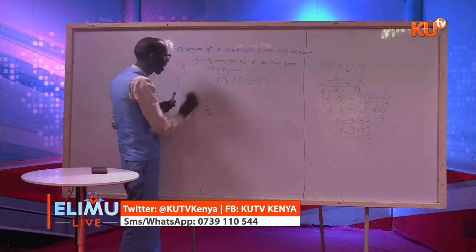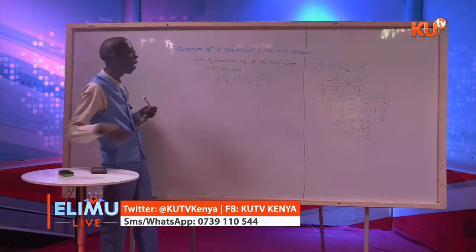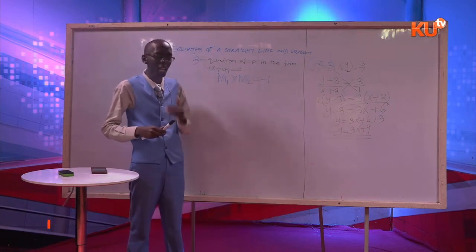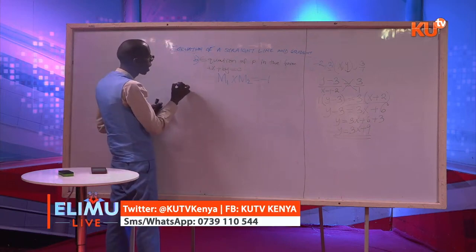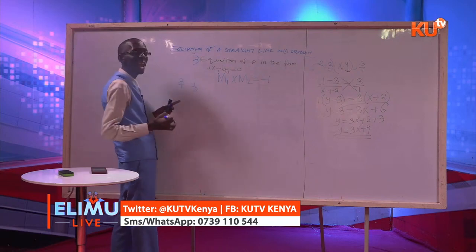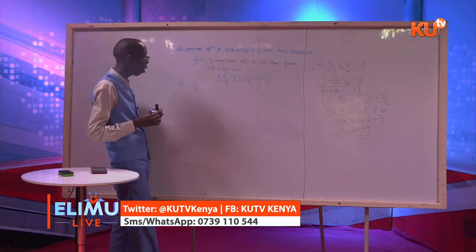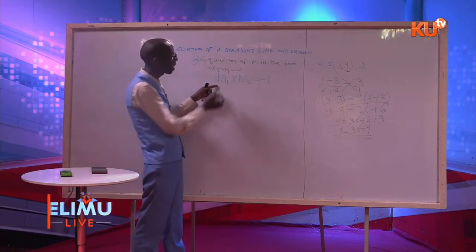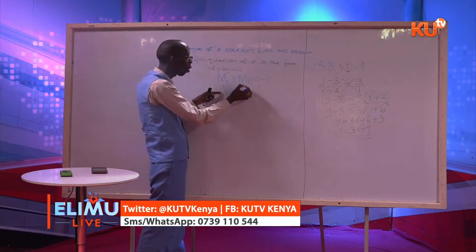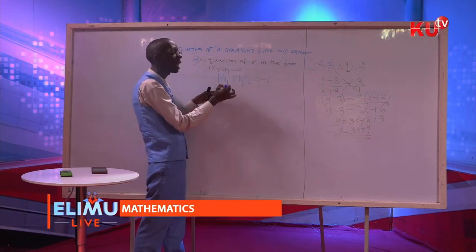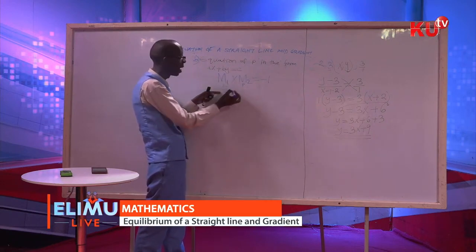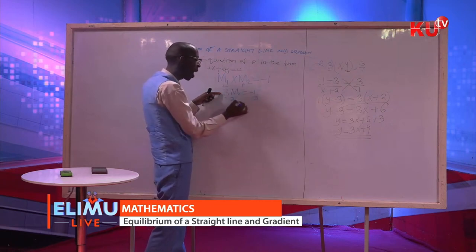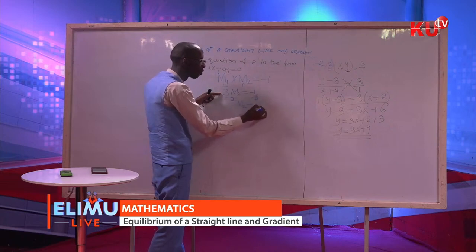The gradient of line L we got as 3 over 1. That means if line P is perpendicular to line L, the gradient of line P will be the reciprocal of 3 over 1, which is 1 over 3, and then change the sign, which will be negative 1 over 3. But you must show your working. So the gradient of L was 3. We need the gradient of P, which is perpendicular to L: M1 times M2 equals negative 1. You divide both sides by 3, and the gradient of P will be negative 1 over 3.